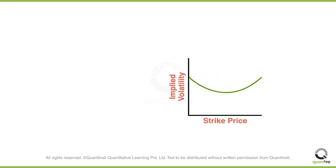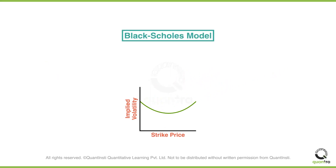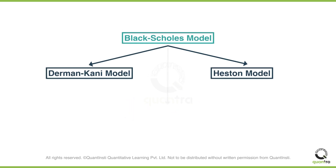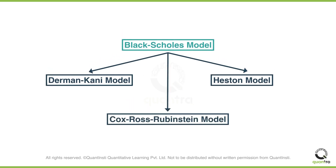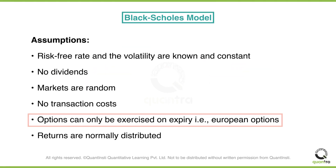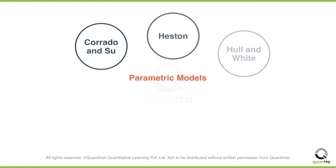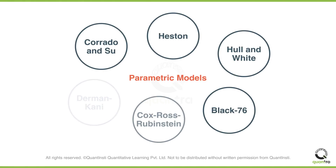To overcome this limitation, extensions of the Black-Scholes model such as the Derman-Kani and Heston model were developed, taking the volatility smile into consideration. The Cox-Ross-Rubinstein model was developed to estimate the price of an American option, overcoming the limitation of the Black-Scholes model where we can only estimate the price of a European option. Similarly, multiple extensions were developed to overcome one assumption or another.